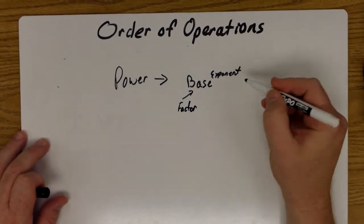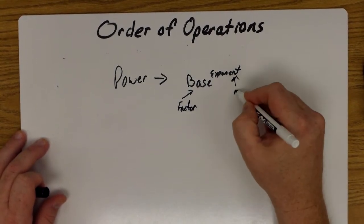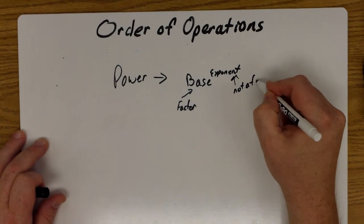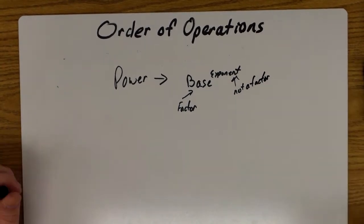is the number to be multiplied. The exponent is not a factor, although a lot of students treat it like a factor.